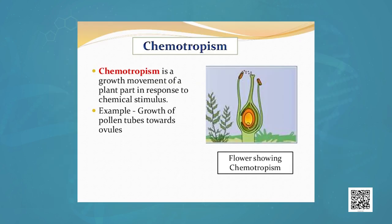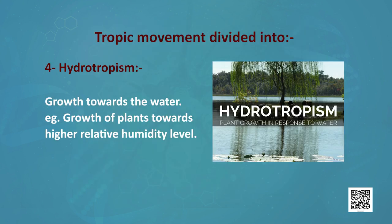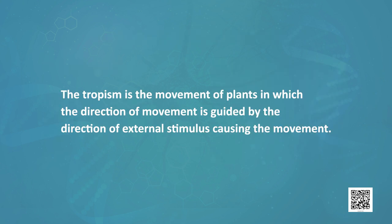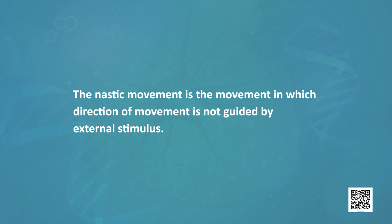Another type is chemotropism — growth navigated by chemical stimulus, for example the growth of the pollen tube towards the ovule. Another is hydrotropism — growth towards water, for example growth of roots towards higher relative humidity levels. Tropism is movement in which the direction is guided by the direction of the external stimulus. Nastic movement is not dependent on direction, like the movement of the touch-me-not plant or when a bird opens a flower. The direction of nastic movement is not guided by the external stimulus.